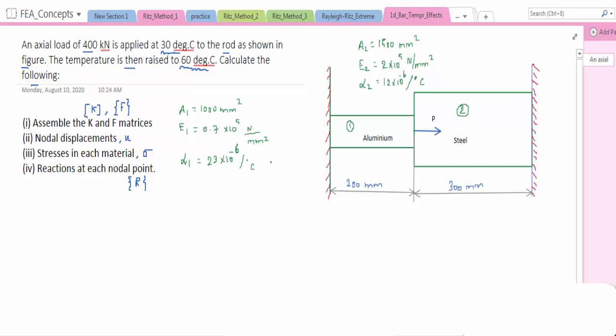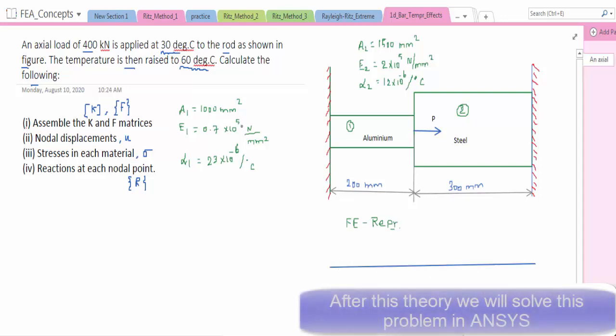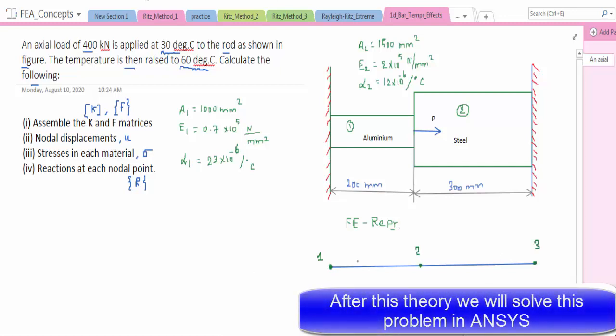The first step is we have to convert this problem into FE representation. So let me take it as a bar element, so this is node 1, 2, and 3. After this theory, we will solve this problem in ANSYS.